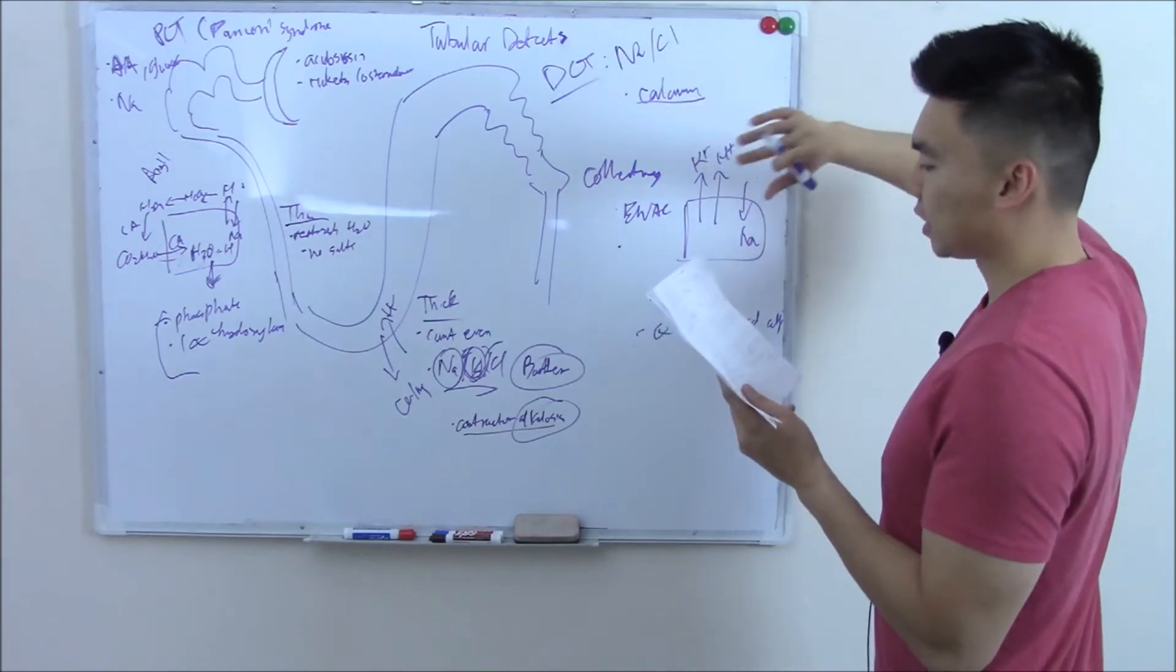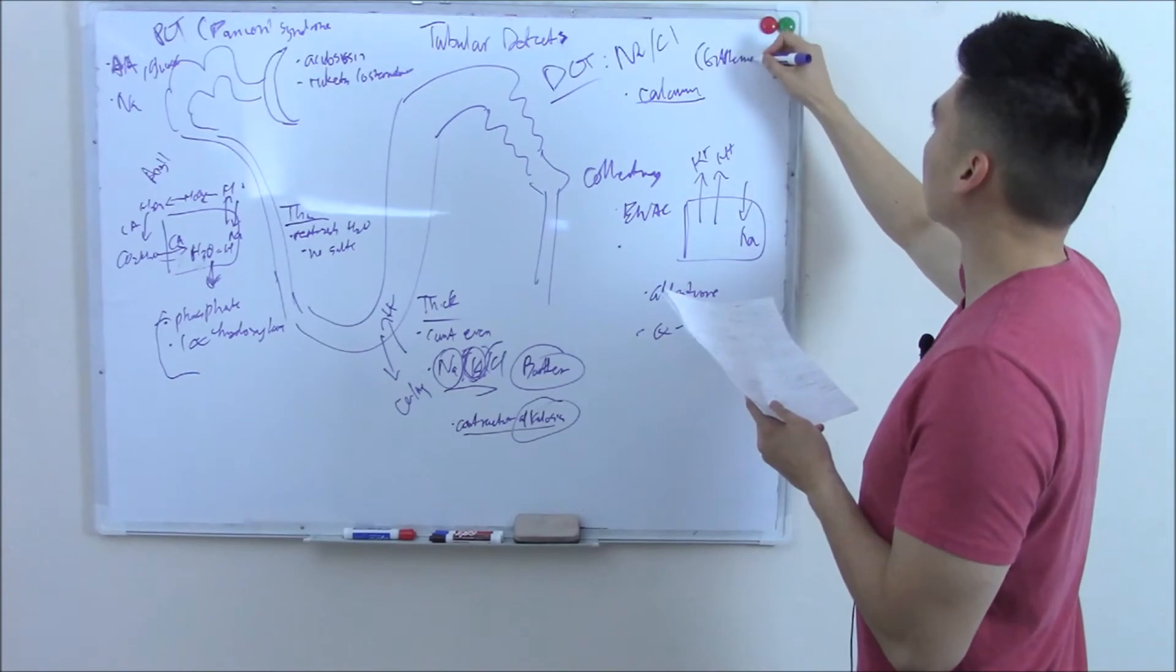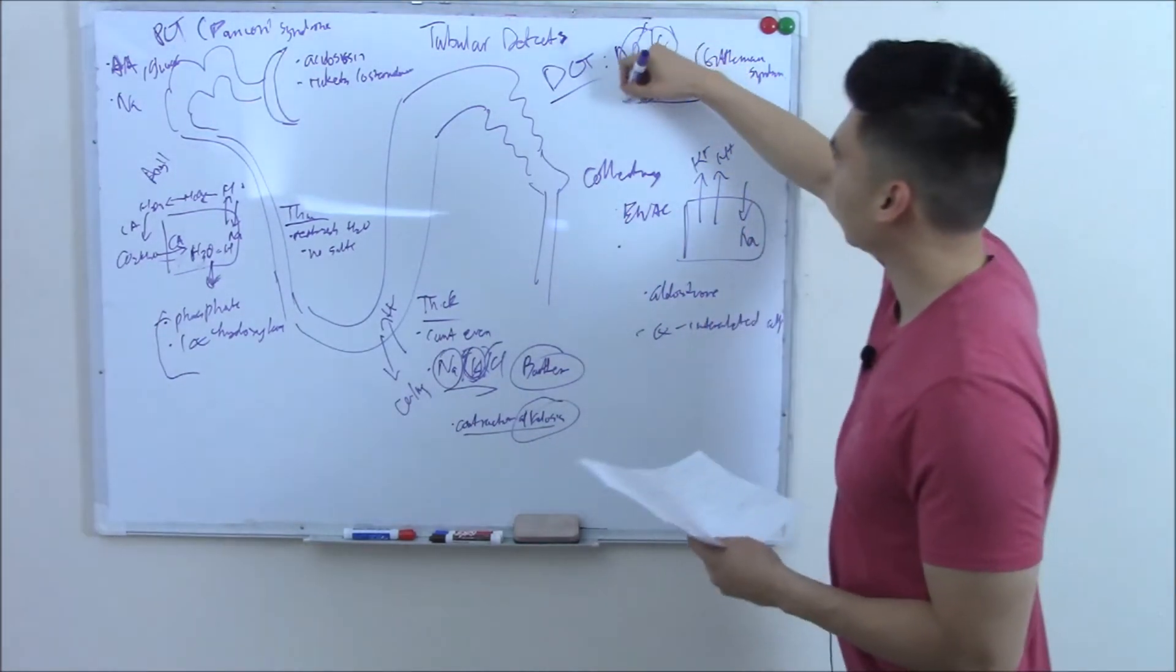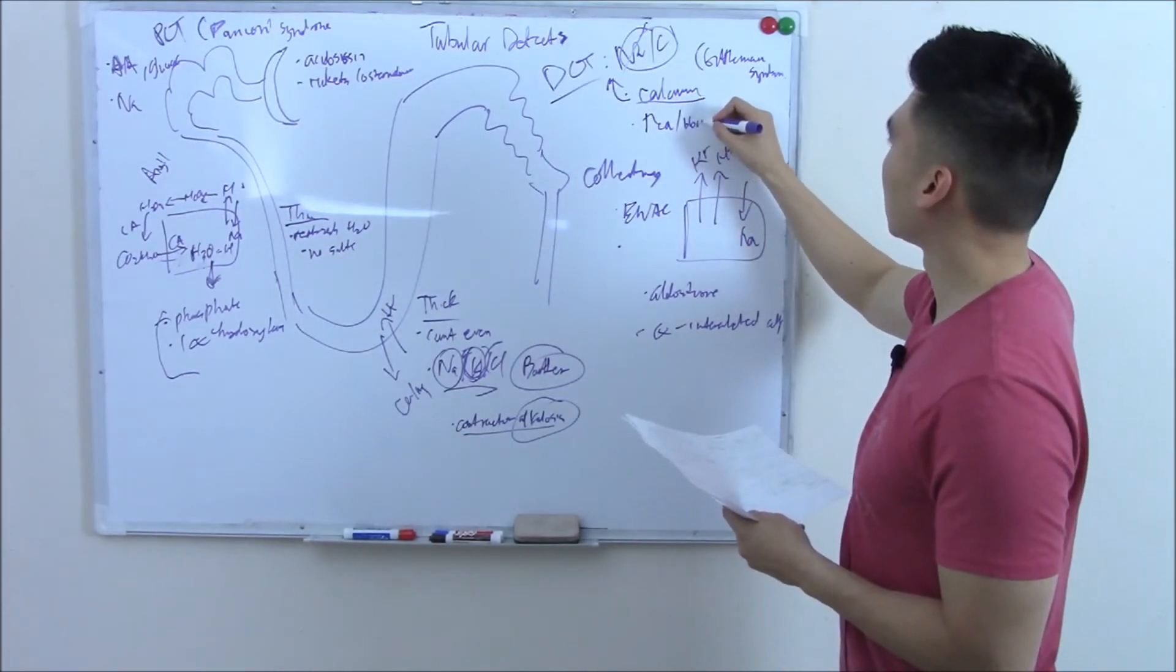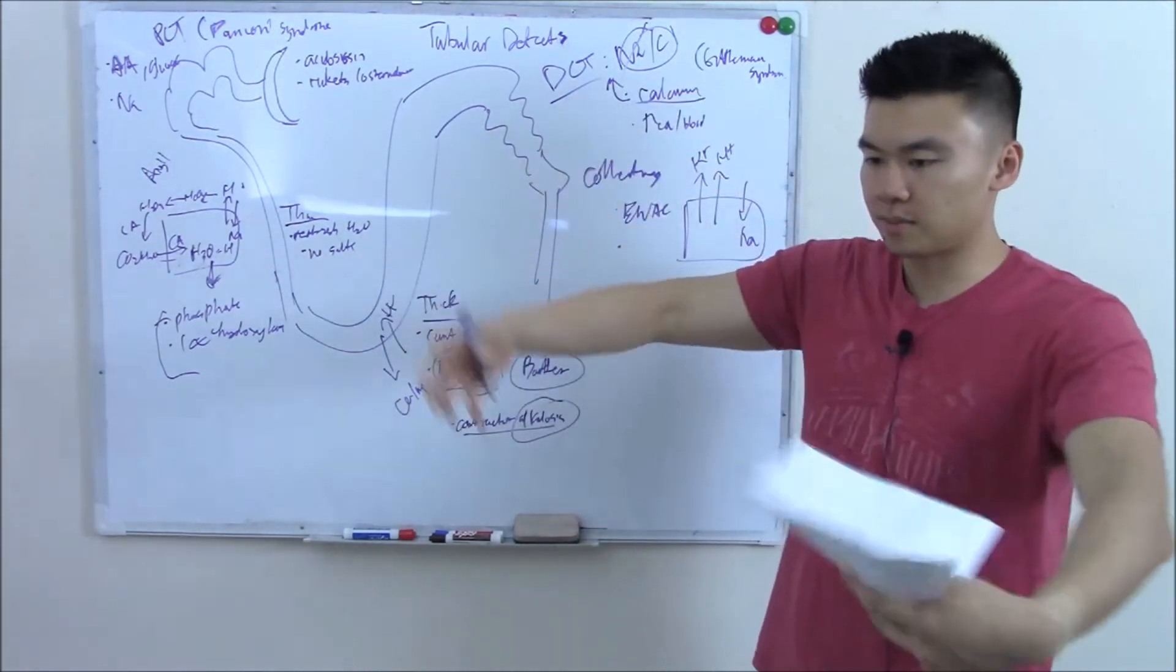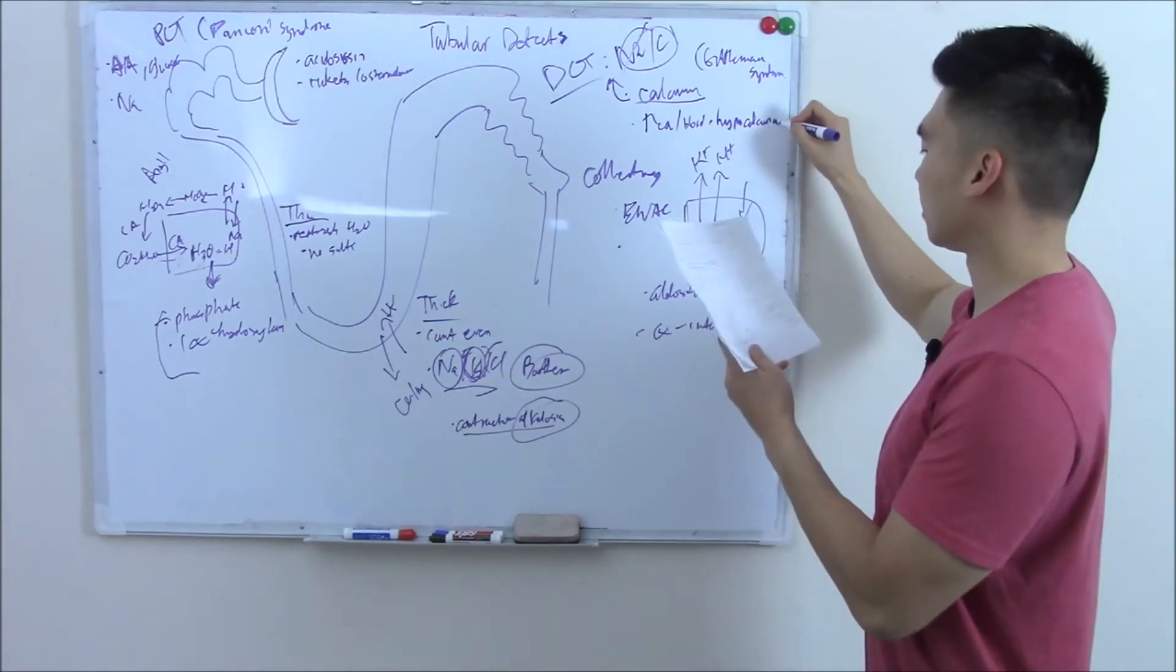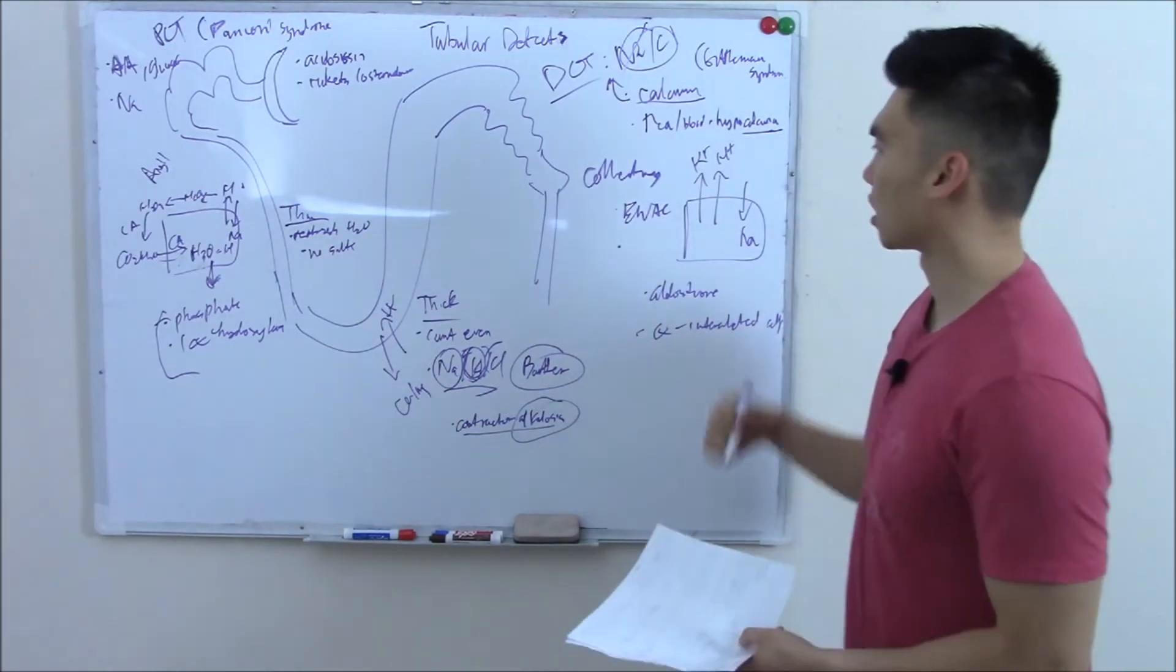Let's talk about your DCT. Inherited problems with your DCT is called Gitelman syndrome. And this channel goes out. And if that channel goes out, what do you think happens? Calcium can jump in and get reabsorbed. So you get high calcium in the blood. You just reabsorbed all that calcium back into your blood, and you get no calcium in the urine. So you get hypocalciuria. It's exactly like taking thiazide diuretics. And then of course, you get contraction alkalosis.